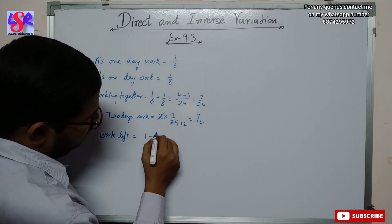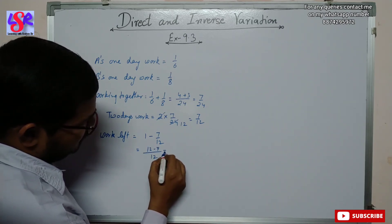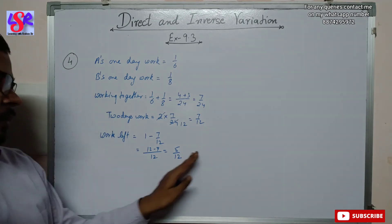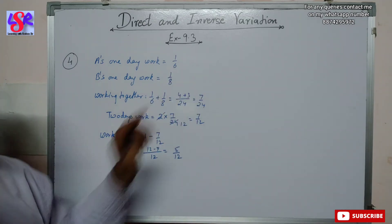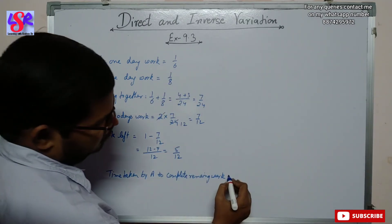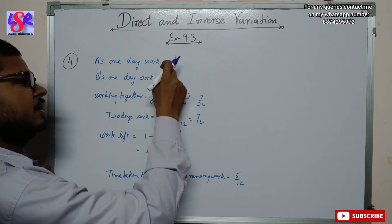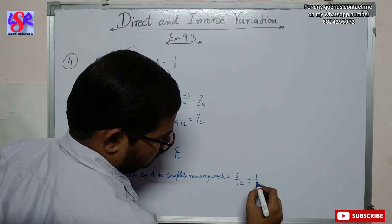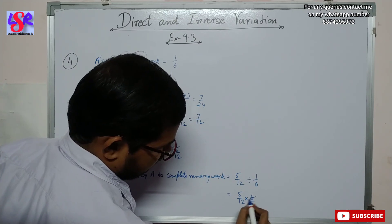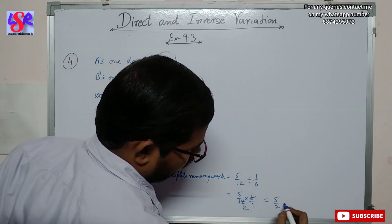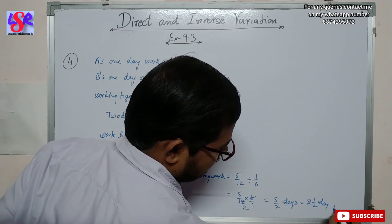This remaining work is going to be completed by A alone. The remaining work equals one minus seven-twelfths, which is five upon twelve. A does one-sixth of the work per day, so the time taken is five-twelfths divided by one-sixth, which equals five upon twelve into six upon one. Cancelling six, this gives five upon two days — that is two and one-half days as the answer.